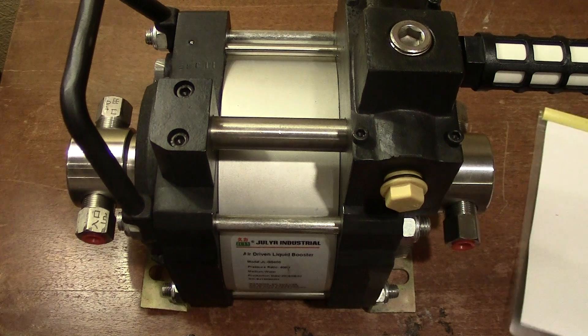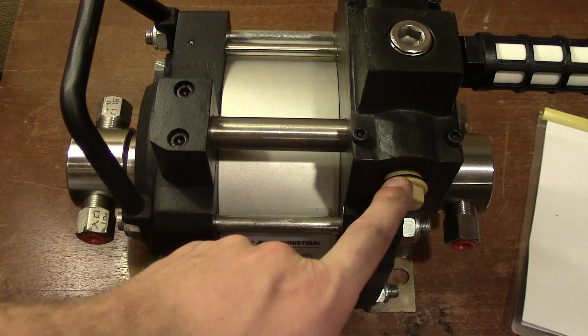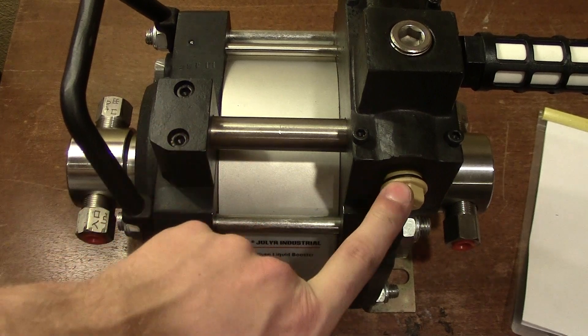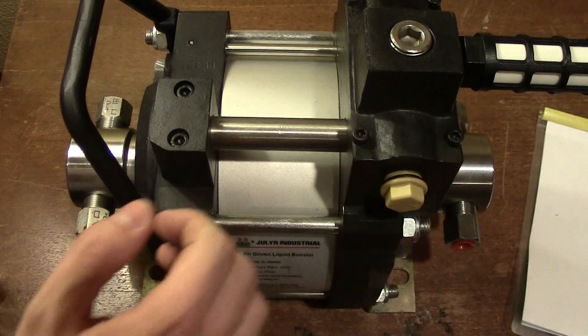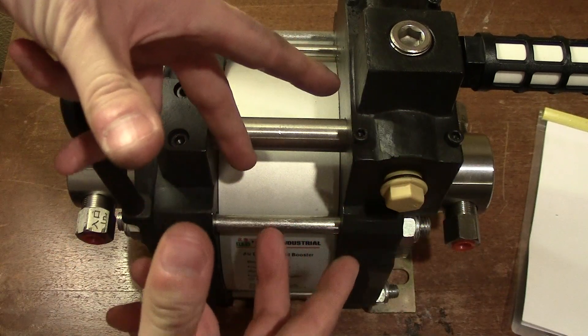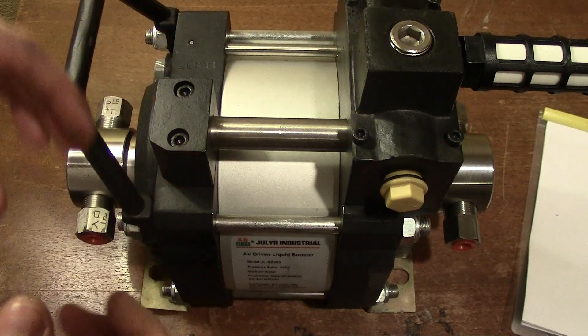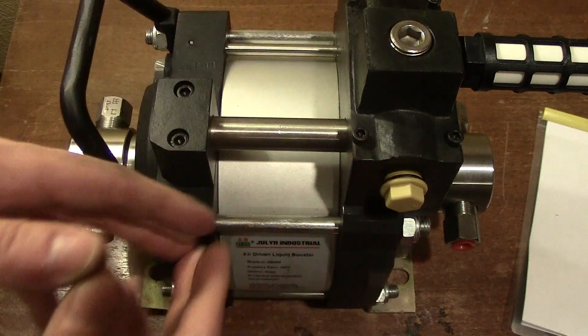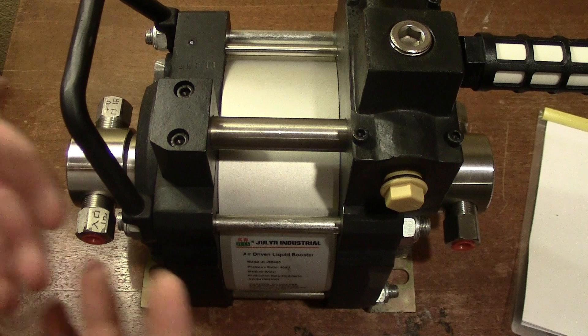Basically what that means is you provide pneumatic air at 80 psi from a compressor here, and it will move a piston to use mechanical advantage. One side has a bigger area piston and one side has a smaller area piston. If you move a bigger area piston a certain distance, on the other side you're going to amplify that pressure depending on the difference in area.